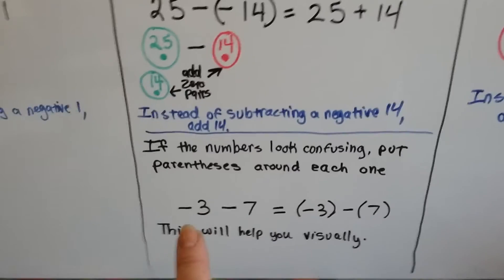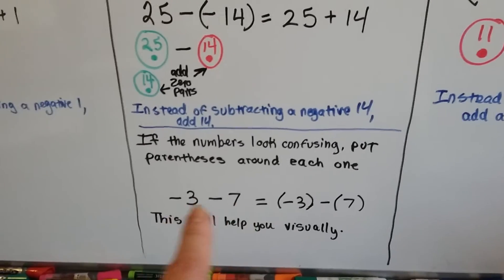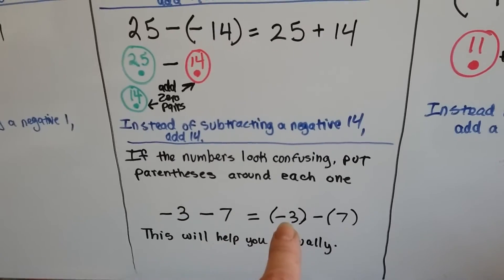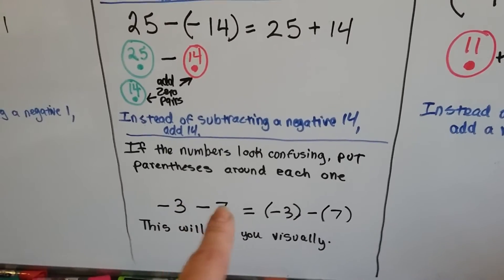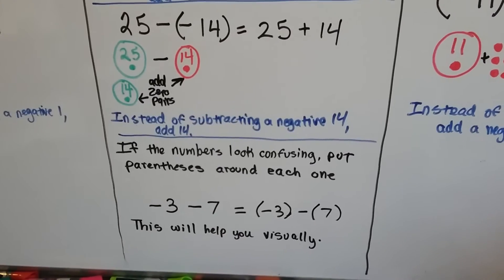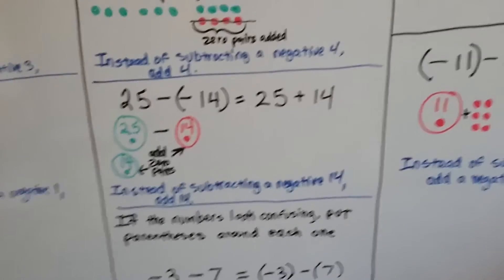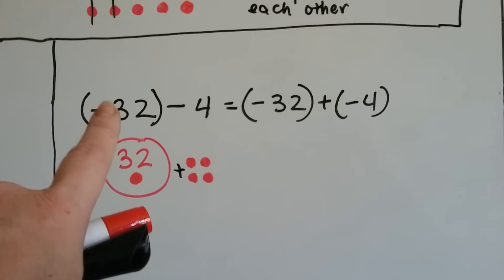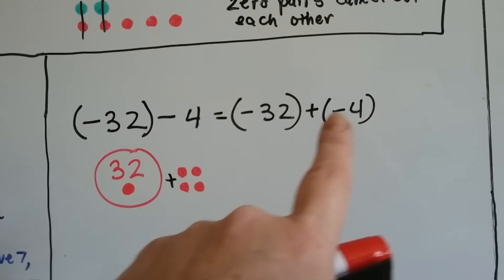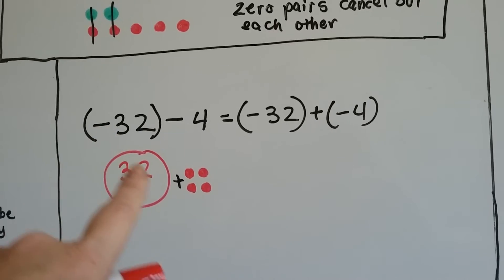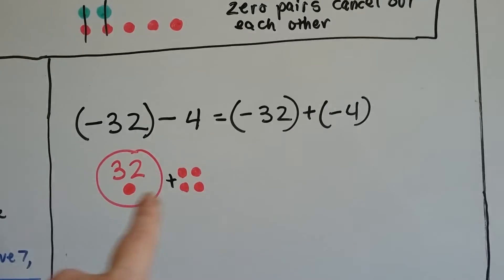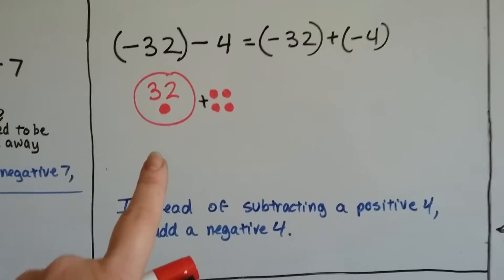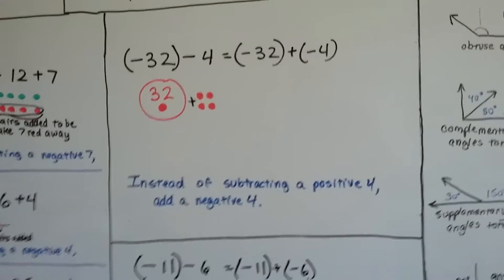If the numbers look confusing, you can put parentheses around each one. If you see a problem and there's one sign in the middle, the 7 is by itself — so you do negative 3 minus 7. If there were two signs in the middle, it would already have parentheses around it. For negative 32 minus 4: instead, we do negative 32 plus negative 4. If you had 32 red chips and added 4 more, you'd have 36 red chips.